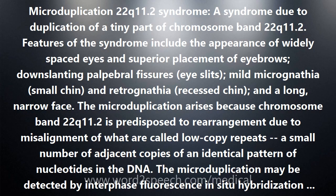The microduplication arises because chromosome band 22q11.2 is predisposed to rearrangement due to misalignment of what are called low-copy repeats — a small number of adjacent copies of an identical pattern of nucleotides in the DNA.